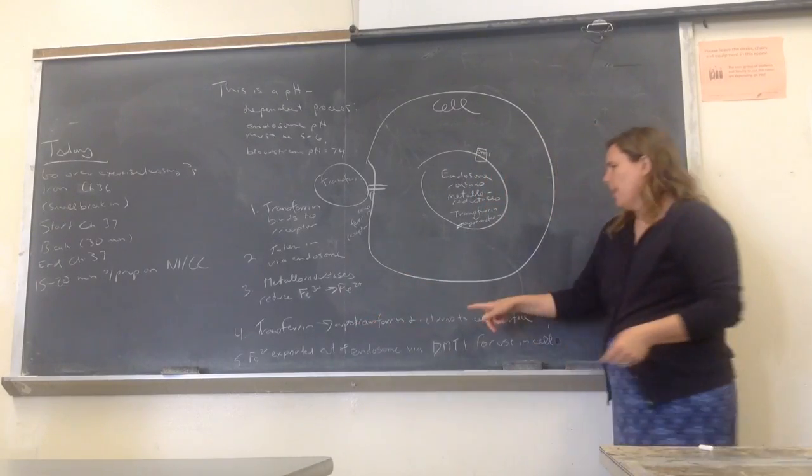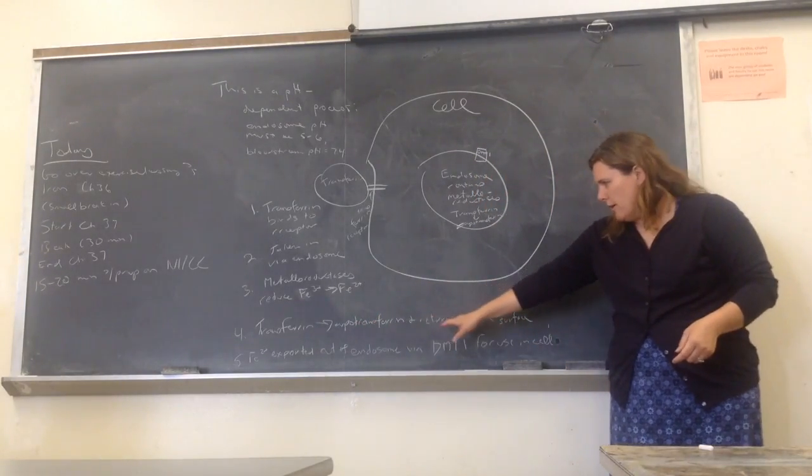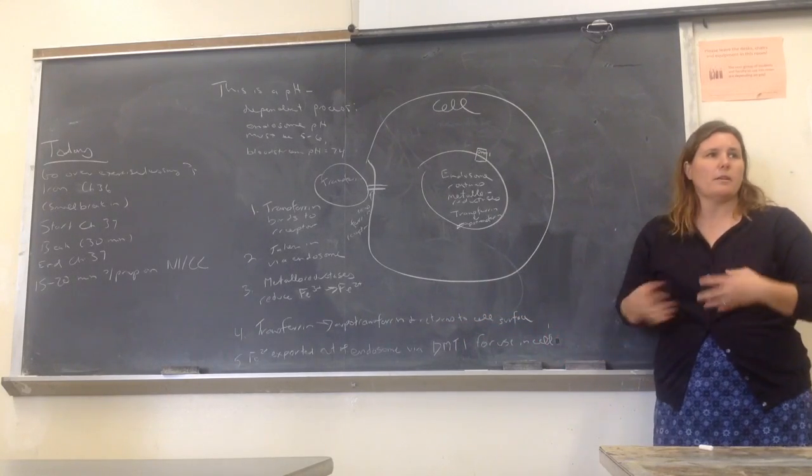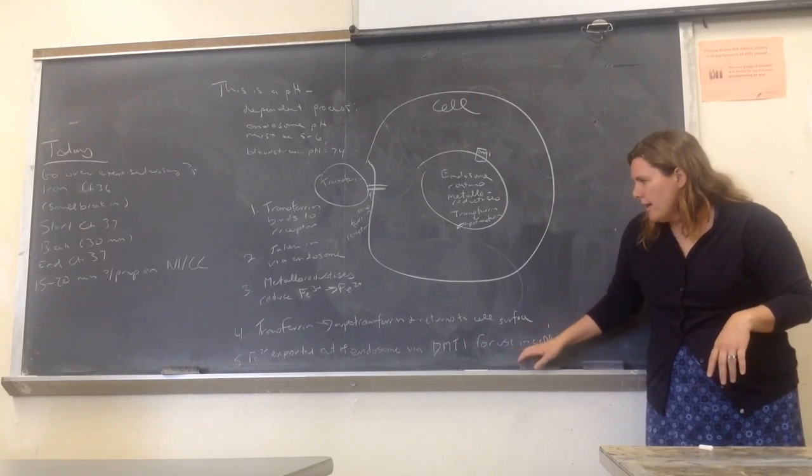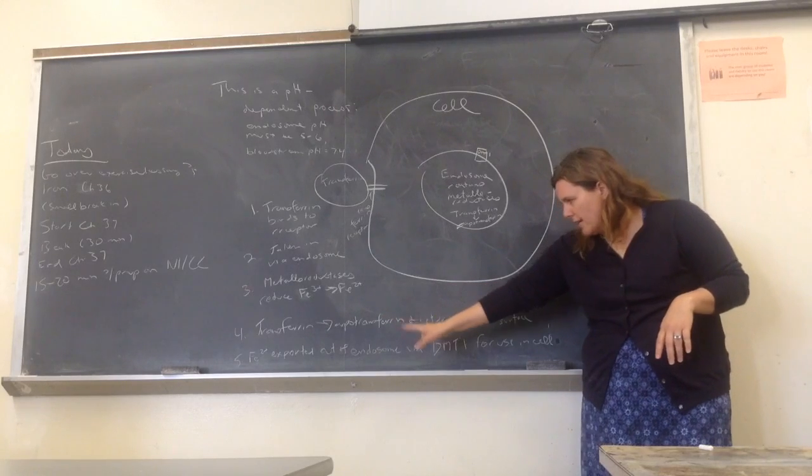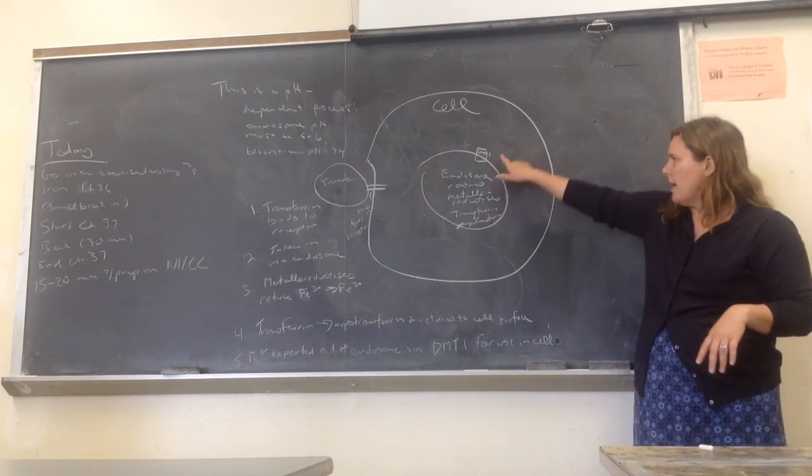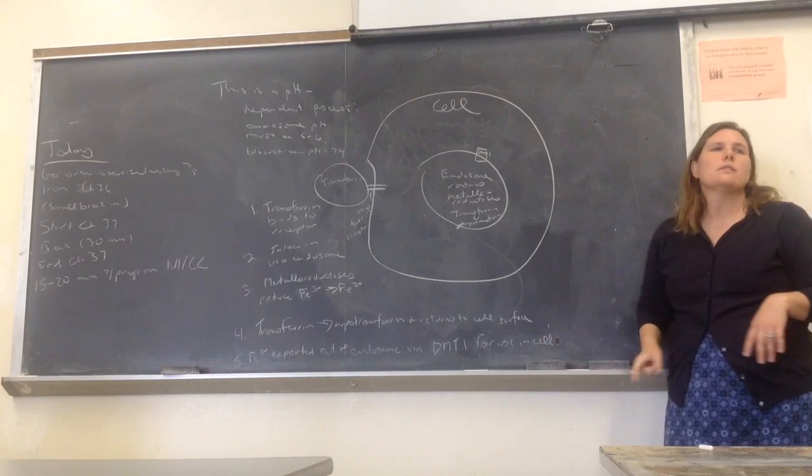And then four, transferrin will become apotransferrin and it returns to the cell surface so it can be recycled and let go. And then the iron 2+ is exported out of the endosome via divalent metal transporter 1 for use in the cell.